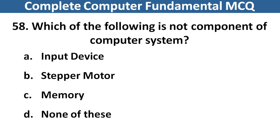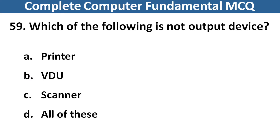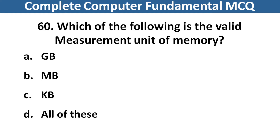Which of the following is not a component of a computer system? Right answer is option B, Stepper Motor. Next question: Which of the following is not an output device? Right answer is option C, Scanner. Next question: Which of the following is a valid measurement unit of memory? Right answer is option D, All of these.